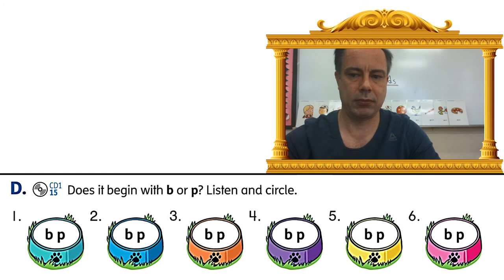D, does it begin with B or P? Listen and circle. Number one: bike, bike. Number two: pin, pin, pin. Number three: pot, pot, pot. Number four: bell, bell, bell. Number five: put, put, put. Number six: bean, bean, bean.